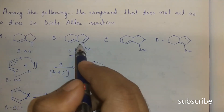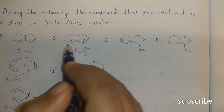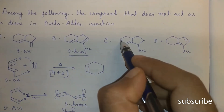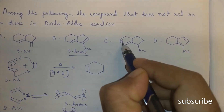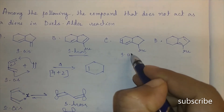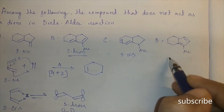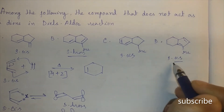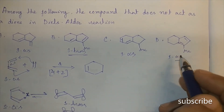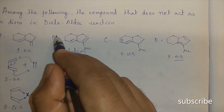This diene will not act as a diene in the Diels-Alder reaction. The other compounds are in s-cis configuration, so they will act as dienes in the Diels-Alder reaction. Therefore, the answer is the compound locked in s-trans configuration within the ring.